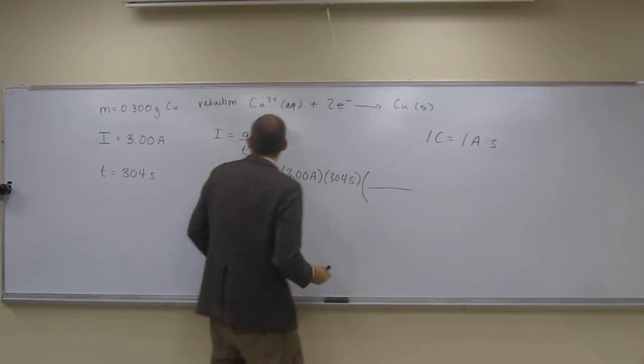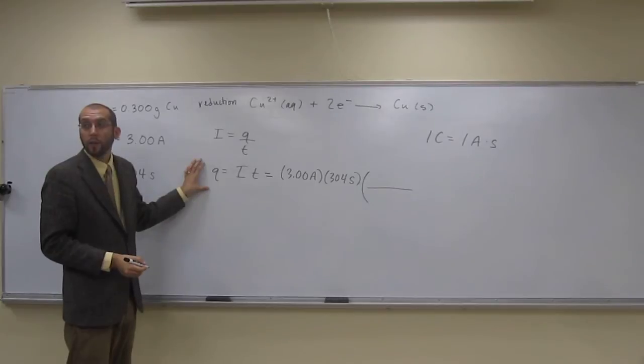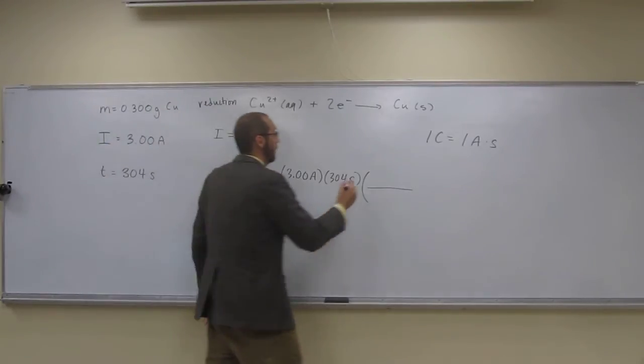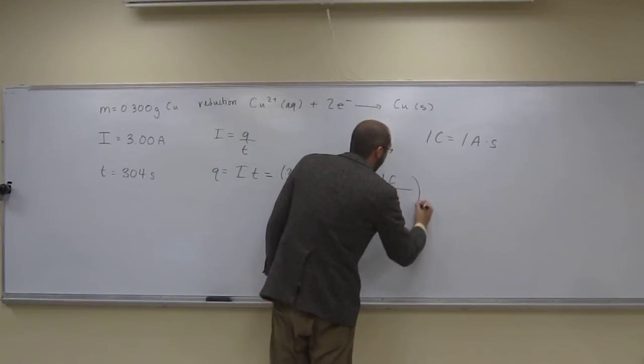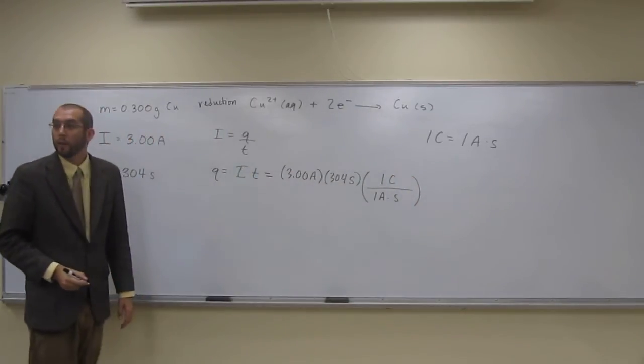And remember, we want charge in units of Coulombs, because that's charge units, is Coulomb. So for every Coulomb, we have one amp second. Like that. Is that okay?